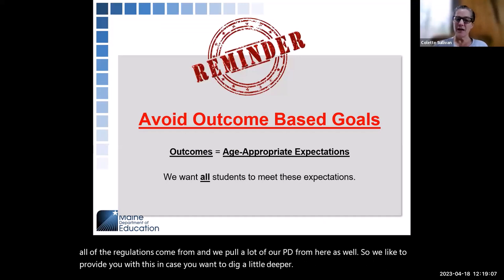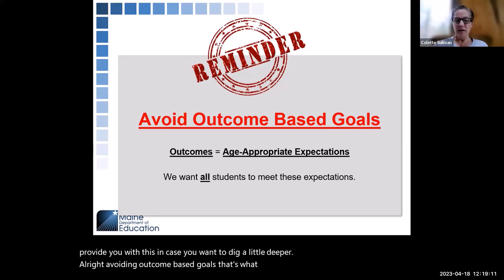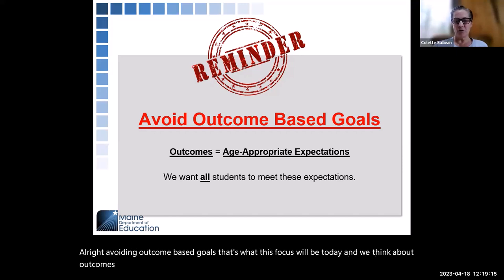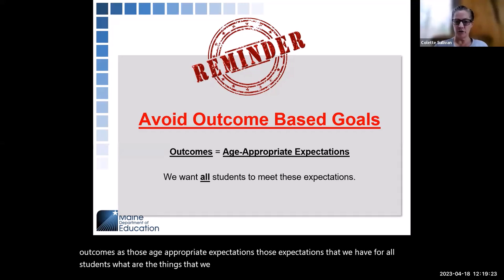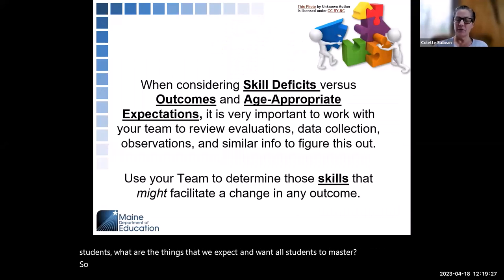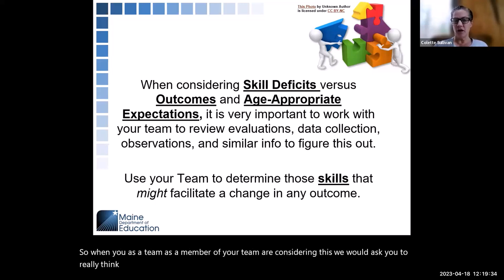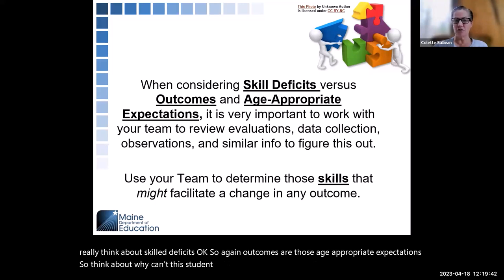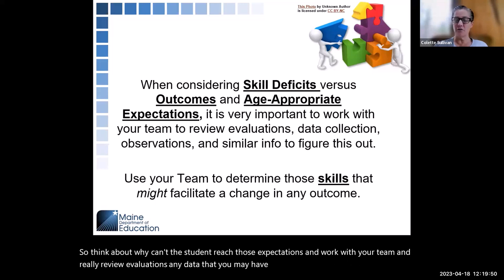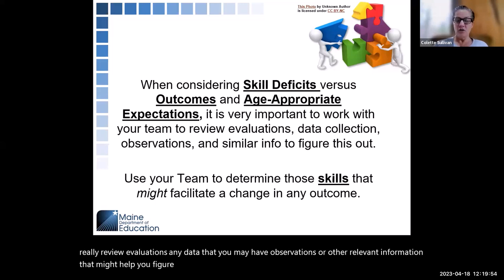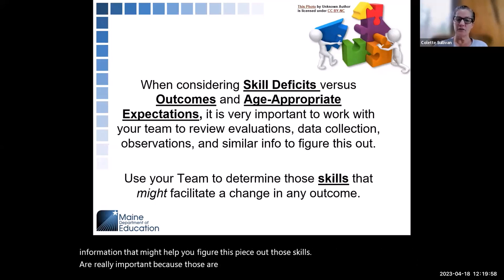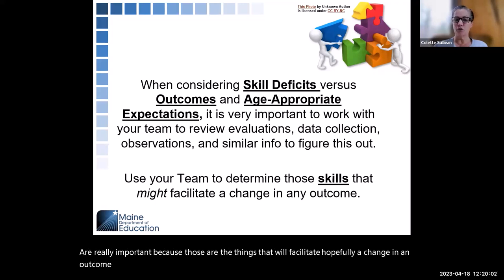Avoiding outcome-based goals — that's what this focus will be today. We think about outcomes as those age-appropriate expectations we have for all students. What are the things we expect all students to master? When you and your team consider this, we would ask you to really think about skill deficits: why can't the student reach those expectations? Work with your team, review evaluations, data, observations, and other relevant information to figure this out. Those skills are what will facilitate a change in the outcome and move the student closer to that age-appropriate expectation.